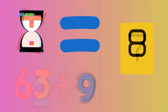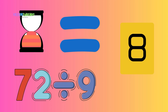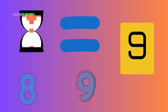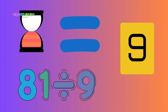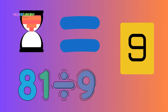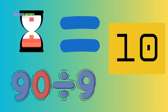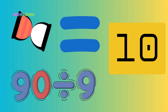72 divided by 9 is 8. Keep on going, this is great. 81 divided by 9 is 9. Practice makes it all so fine. 90 divided by 9 is 10. Sing it loud and start again.